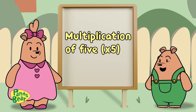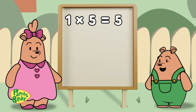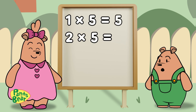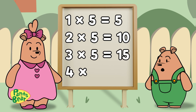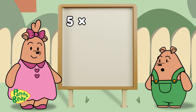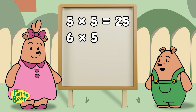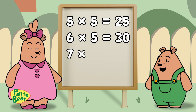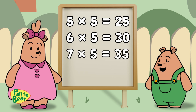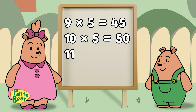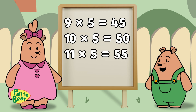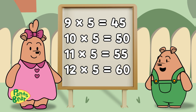Multiplication of 5. 1×5=5, 2×5=10, 3×5=15, 4×5=20, 5×5=25, 6×5=30, 7×5=35, 8×5=40, 9×5=45, 10×5=50, 11×5=55, 12×5=60.